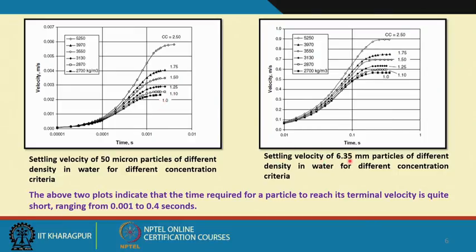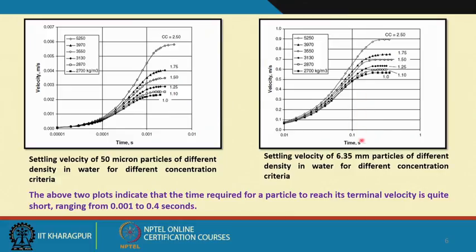For 6.35-millimeter particles — much coarser — the time required to reach the terminal settling velocity condition is much higher than for finer particles. The two plots together indicate that the time required for a particle to reach terminal velocity ranges from 0.001 to 0.4 seconds. Finer particles require less time than coarser particles. The residence time you provide is therefore a very important criterion for deciding whether you can neglect the dv/dt term or not.